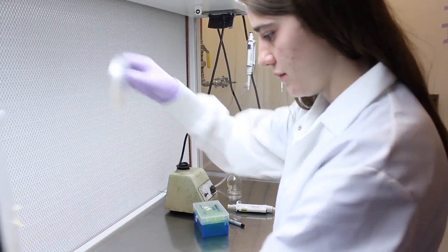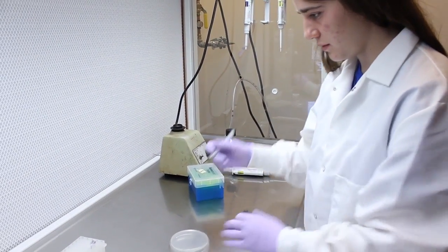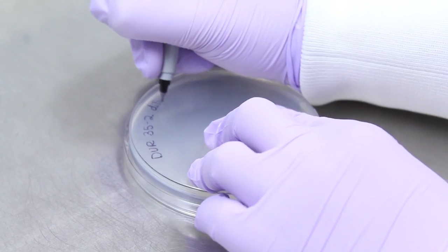Label a BCDA plate with the sporophyte number, your initials, and the date. Once again, make sure to spell out the date so that it doesn't get confused with the sporophyte number.